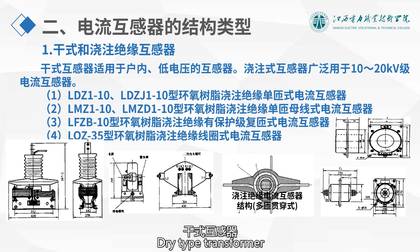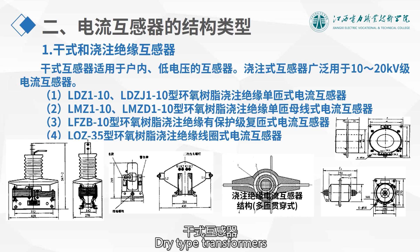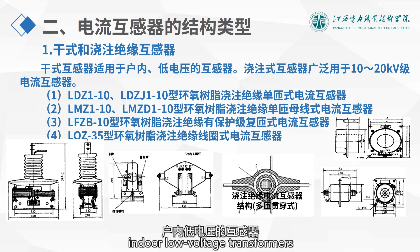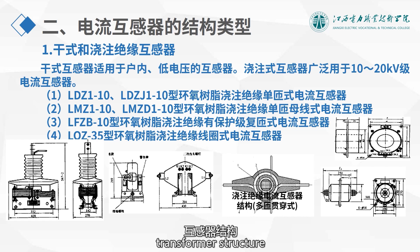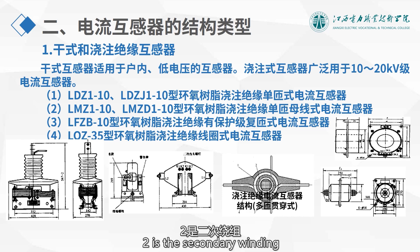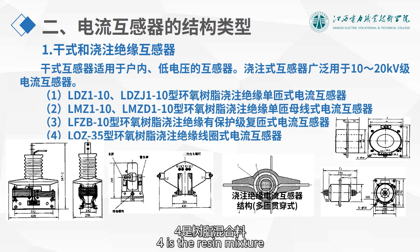There are also dry type transformers and cast insulation transformers. Dry type transformers are suitable for indoor low voltage applications. This is a cast insulation current transformer structure: 1 is the primary winding, 2 is the secondary winding, 3 is the core, and 4 is the resin mixture.